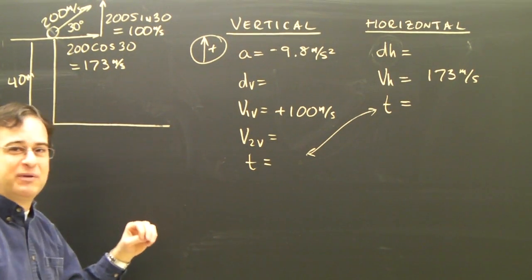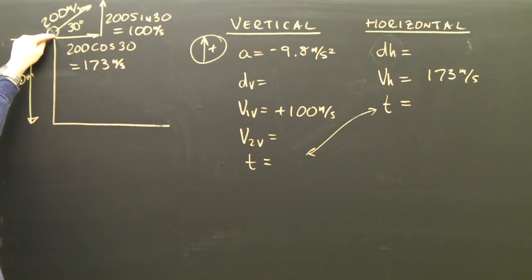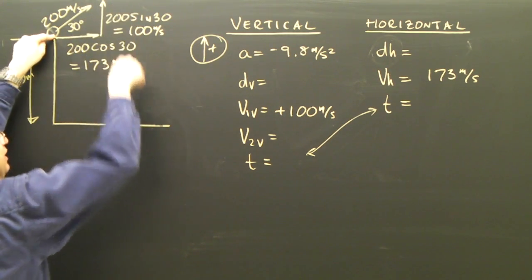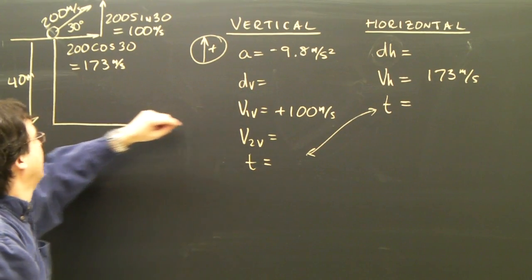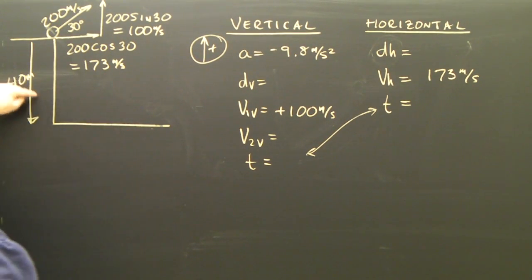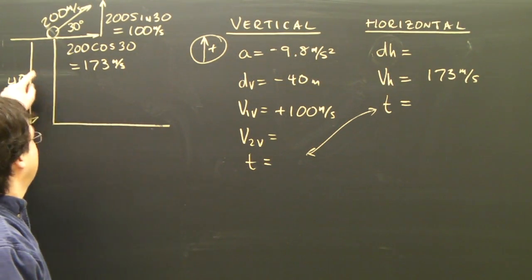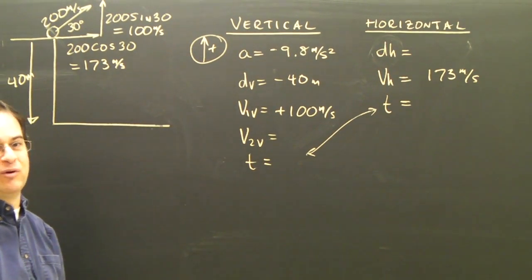Then I look at my other information. The vertical height is 40 meters. Well, the projectile started there. It went up and it landed down here. But all I'm interested in is the displacement, really. And since it started here and ended up downwards, it ended up 40 meters below where it started. So this D is 40 meters, and it's negative because it ended up lower than where it started.